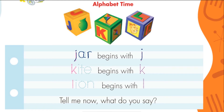Very good, my kids. Continuamos con la segunda palabra, KITE. Vamos a trazarla. K, la primera letra, I, T, E. Kite. Kite begins with K. Very good, my kids. Kite begins with K. Kite empieza con K.